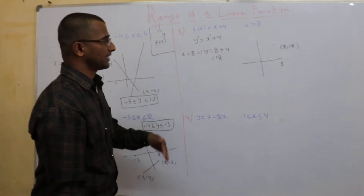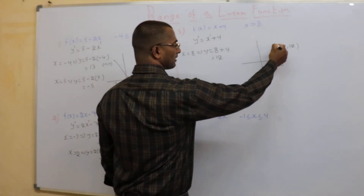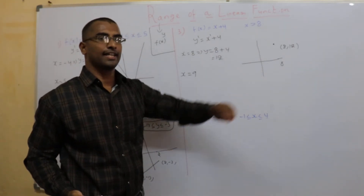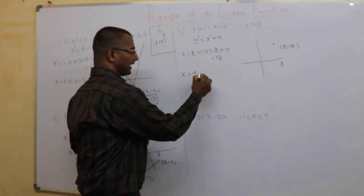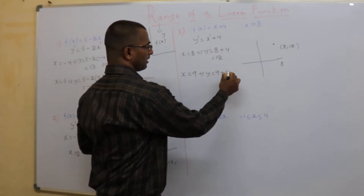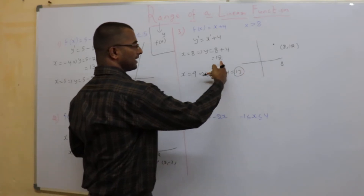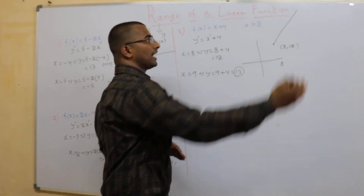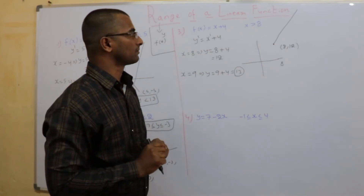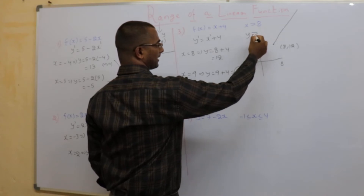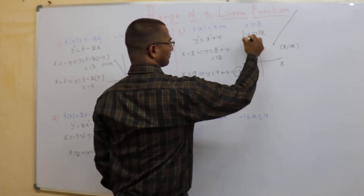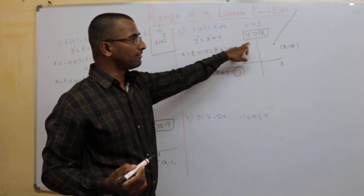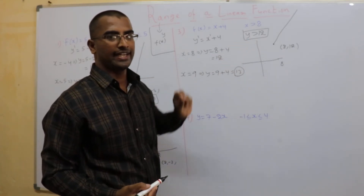Now when x is 9 — because we said x greater than 8 — my y value will be 9 plus 4, which is 13. This 13 is greater than 12. That means after 8 the line is moving up, so for all values of x greater than 8 my answer is y greater than 12. So this is my range for that linear function.